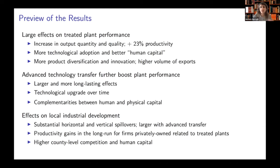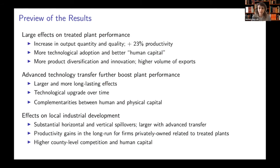We also find that advanced technology transfer — receiving Soviet machines and training for high-skilled technicians — further boosted plant performance. The effects were larger, more lasting, with a greater technological upgrade due to complementarities between human and physical capital. Finally, we document that the program generated substantial horizontal and vertical spillovers, larger for companies that locate close to plants that received the advanced transfer, while in the long run the productivity gains seem to persist only for firms that became privately owned and are economically related to treated plants — either working in the same sector or in upstream or downstream sectors.